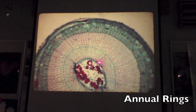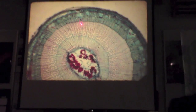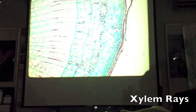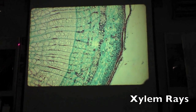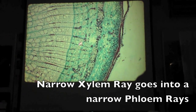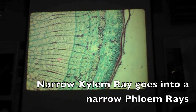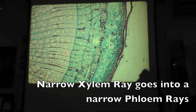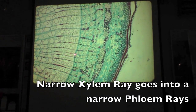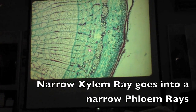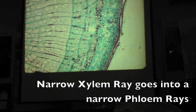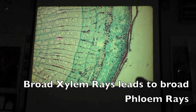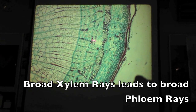And then you've got these lines — what are these lines called? Xylem rays. Here's one — what kind of xylem ray is this? Broad or narrow xylem ray? Narrow. You know that because it goes into a narrow phloem ray. How about this one? Broad xylem ray — goes into a broad phloem ray.